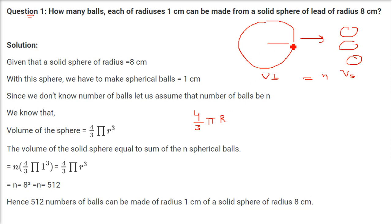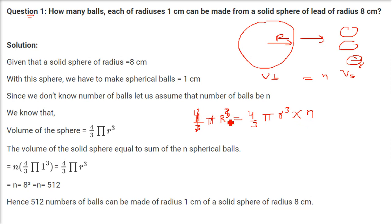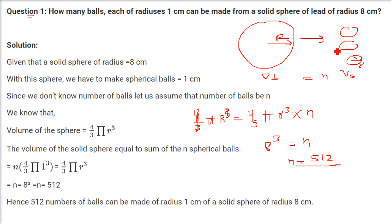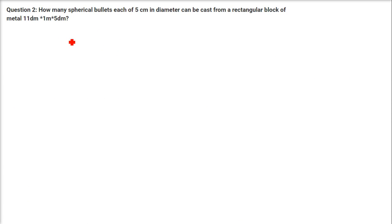So 4/3 π R³ (capital R for the bigger one) equals N times 4/3 π r³ for the smaller one. Cancel out 4/3 π from both sides. The bigger radius is 8, so R³ = 8³. The smaller radius is 1, so r³ = 1. Therefore N = 8³ = 512. These 512 balls are made from the solid sphere.